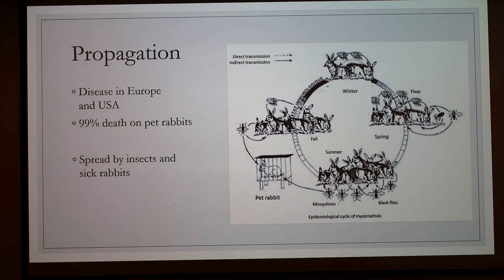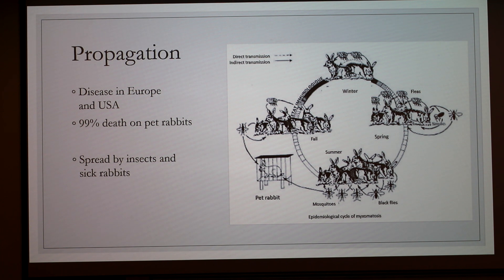Myxomatosis can be spread by different ways. The most common is by insects. Fleas, mosquitoes, and black flies can carry the virus and transmit it when they bite a rabbit. Myxomatosis can also be spread by direct contact between infected rabbits, or indirect contact through handling a sick rabbit then handling a healthy rabbit.